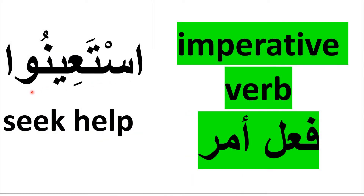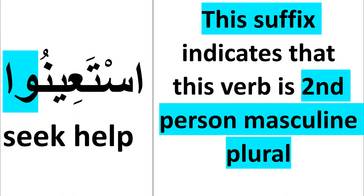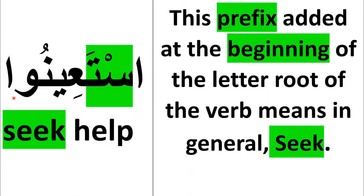استعينوا means 'Seek Help' and is a فعل أمر, or imperative verb. The suffix on استعينوا indicates that this verb is second-person masculine plural.